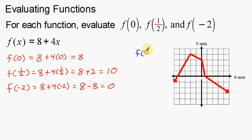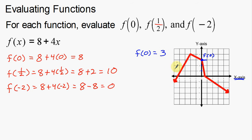So it's basically going to be the same thing: f of zero. You're asking yourself, where do I plug in the zero? There's no equation, there's no x's to plug in. Well, instead of an x, you're plugging in a zero, so we're going to go to the x-axis. We go to x equals zero — right in the middle — and find where the graph is. The y-coordinate there, counting up, is three. So f of zero equals three.